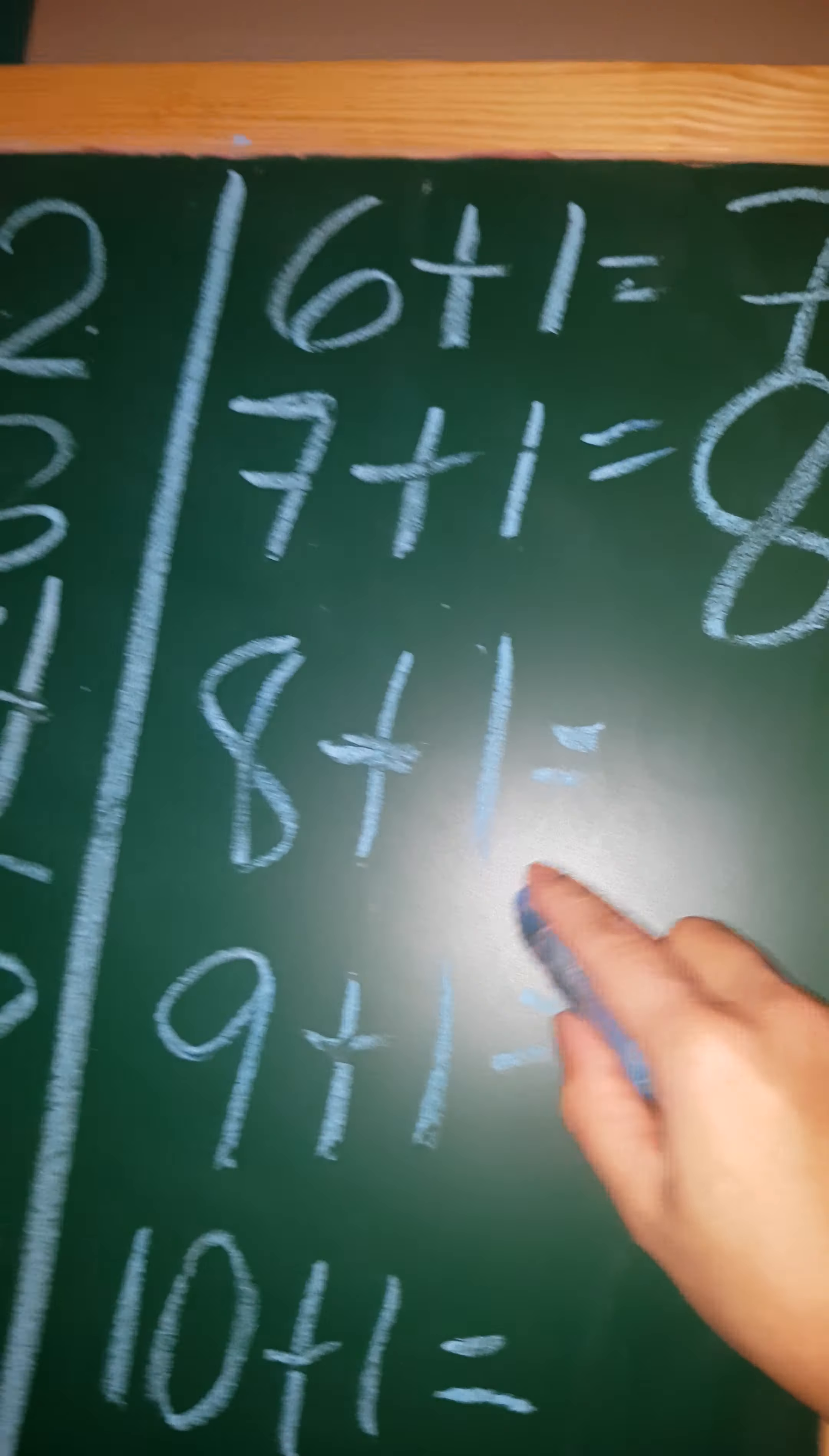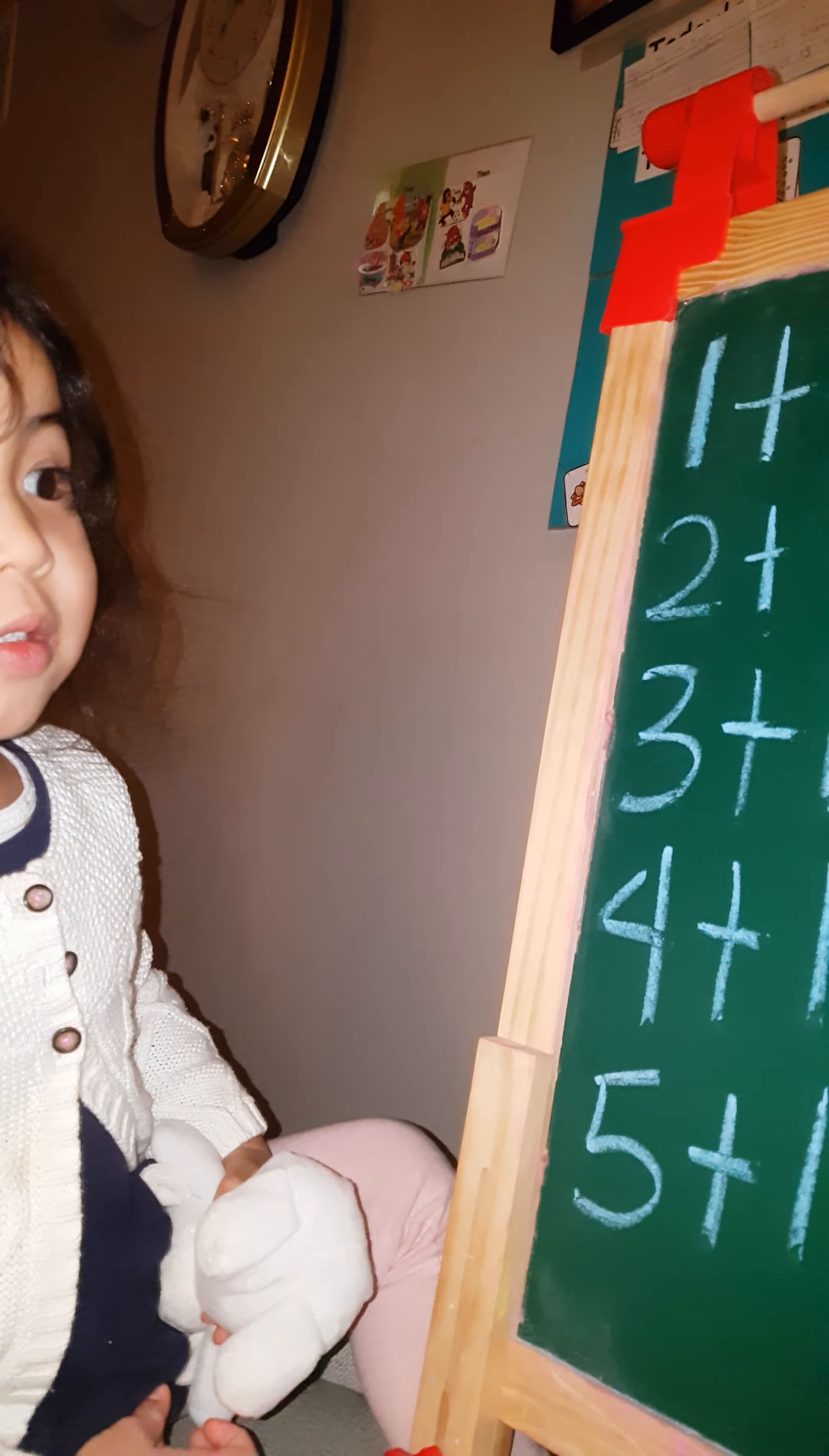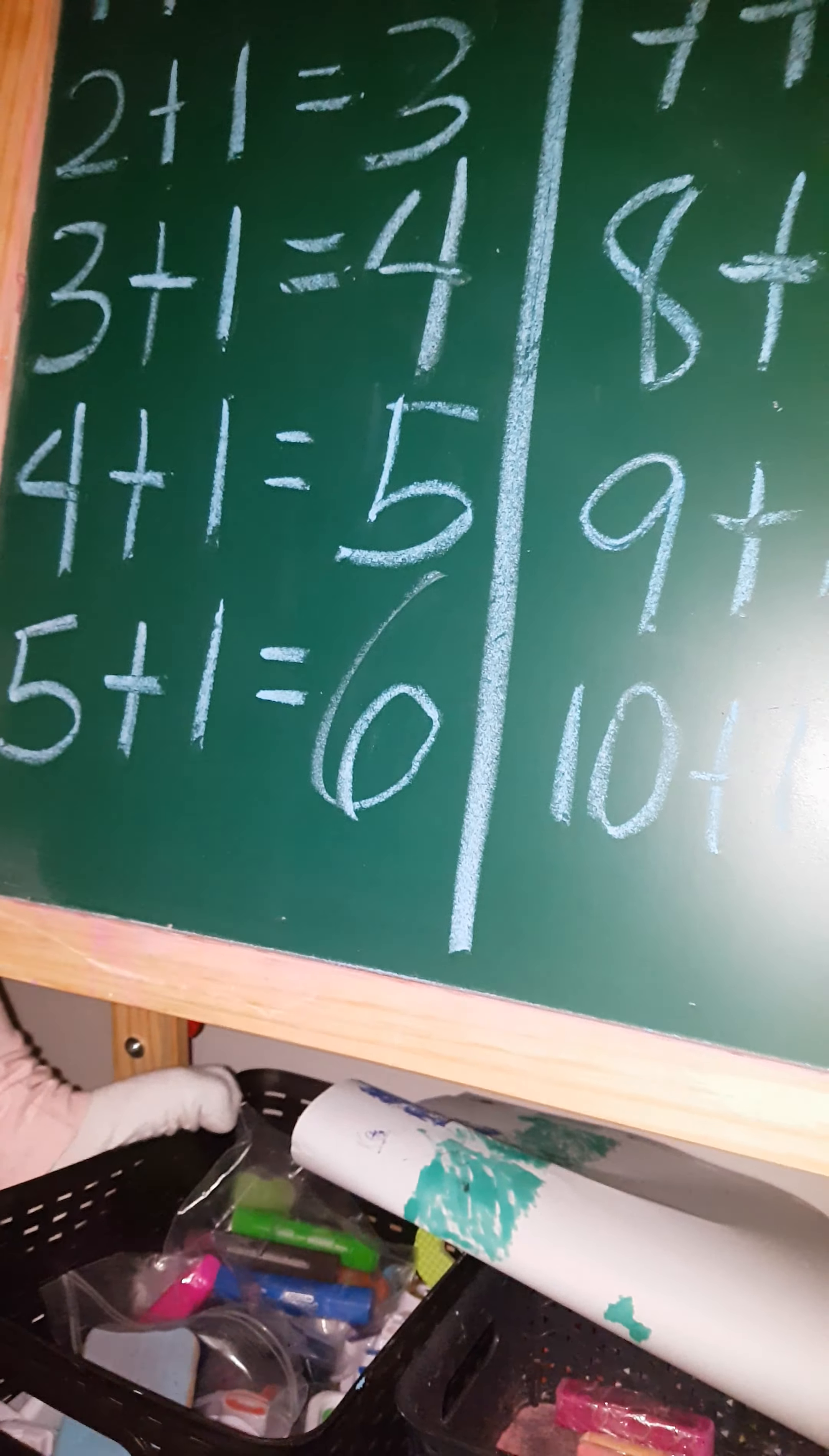Eight plus one equals? Eight. Eight plus one equals? Nine. Louder. Nine. Nine. Very good. Nine. Okay, nine plus one equals? Nine plus one equals? Ten. Ten. Very good, Pauline.